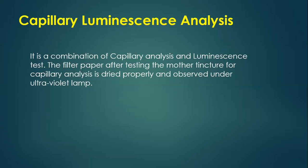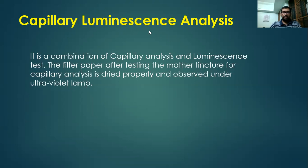This concludes the different types of analytical tests in physical evaluation. To briefly recap, the processes in physical evaluation include determination of physical constants such as solubility, specific gravity, boiling point, melting point, congealing temperature, refractive index, optical rotation, alcohol content, weight per ml, pH value, total solids, and water content or loss on drying. Other analytical methods include chromatographic study, ultraviolet visible spectroscopy, fluorescent test, capillary analysis, luminescent analysis, capillary luminescence analysis, and electrophoresis. This completes the topic on physical evaluation and standardization.